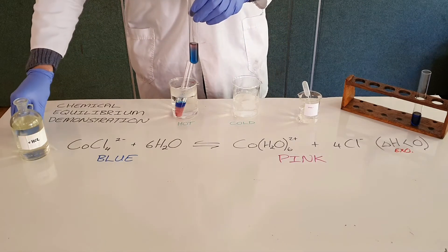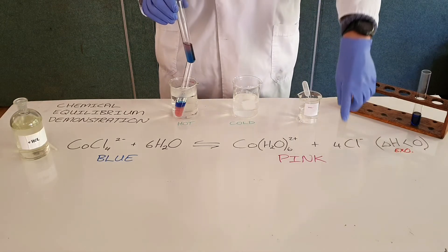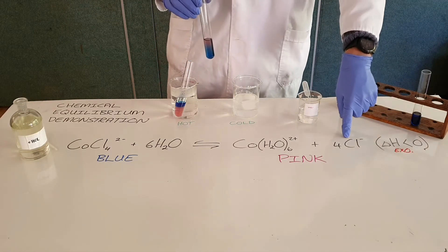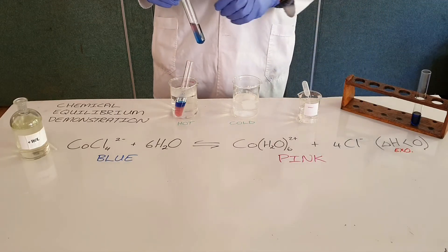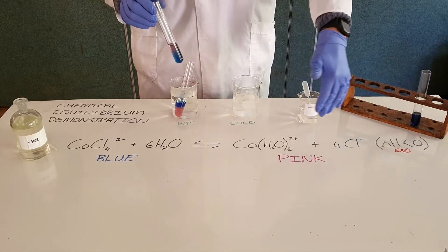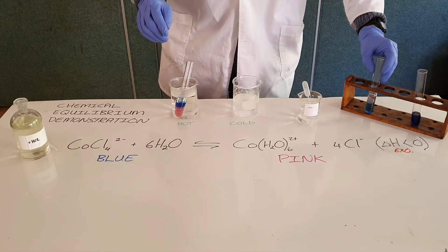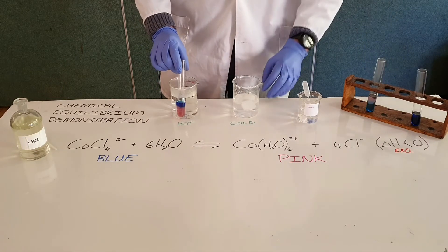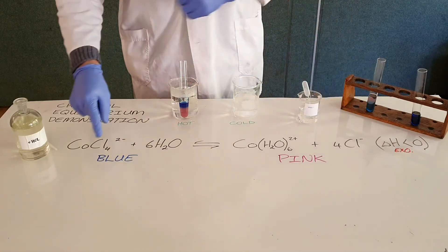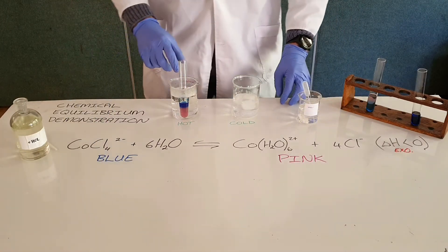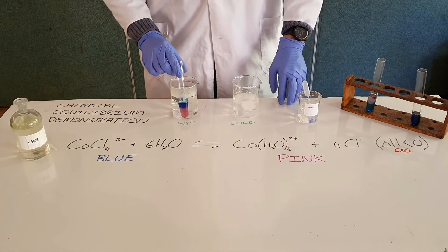It's important to note that the common ion effect means it is not necessary to add specifically only chlorine. You can add something that contributes to the overall number of ions, and that will still change the concentration and therefore the equilibrium position. In this reaction, we have very clearly favored the reverse reaction. The reverse reaction produces more cobalt chloride, which is blue in color, and we can see we have produced a more blue solution.